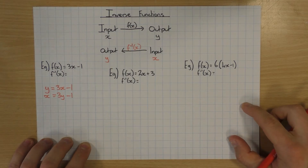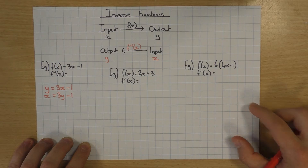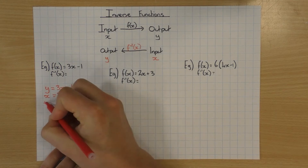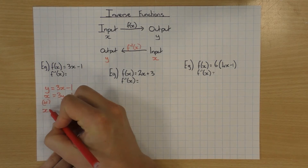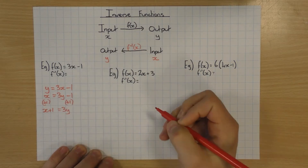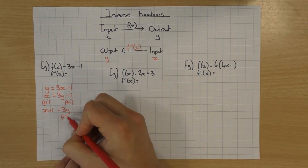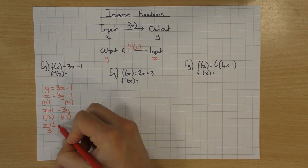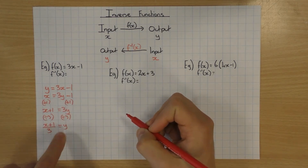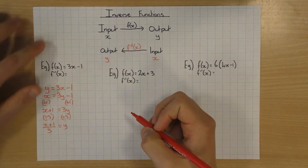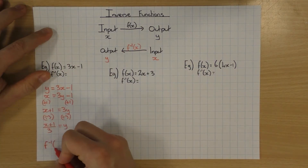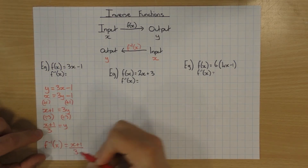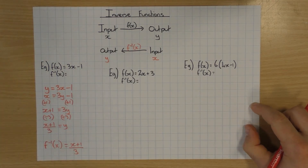If you're unsure about rearranging equations, make sure you check out the rearranging equations video. To get y on its own from x = 3y minus 1, I add 1 to both sides to get x plus 1 equals 3y, then divide by 3. So x plus 1 divided by 3 equals y. Don't leave it like that — write it properly as f to the power of minus 1 of x equals x plus 1 divided by 3. That's the inverse function.